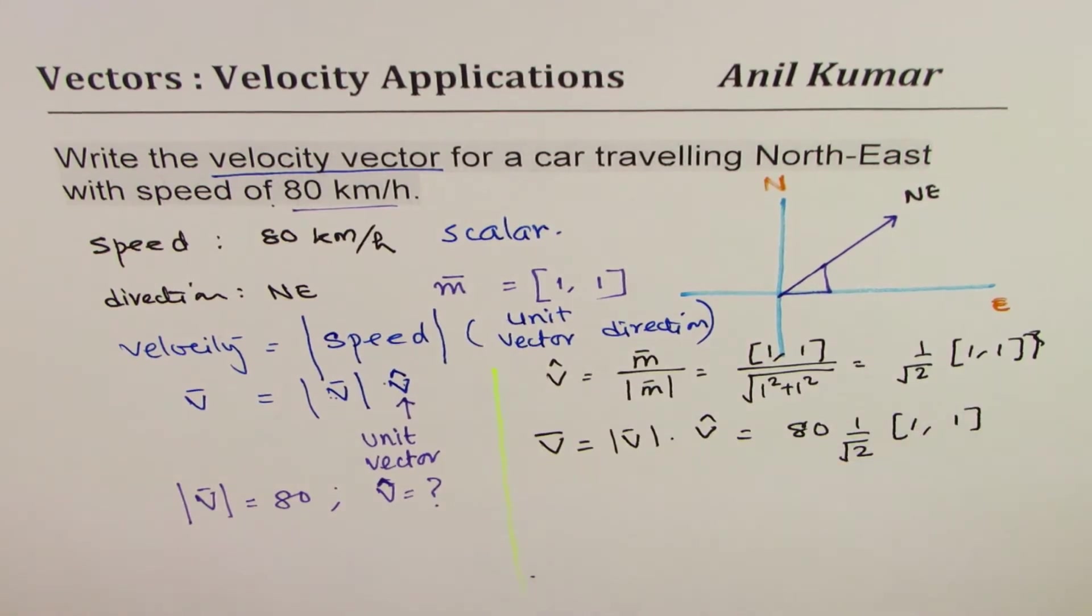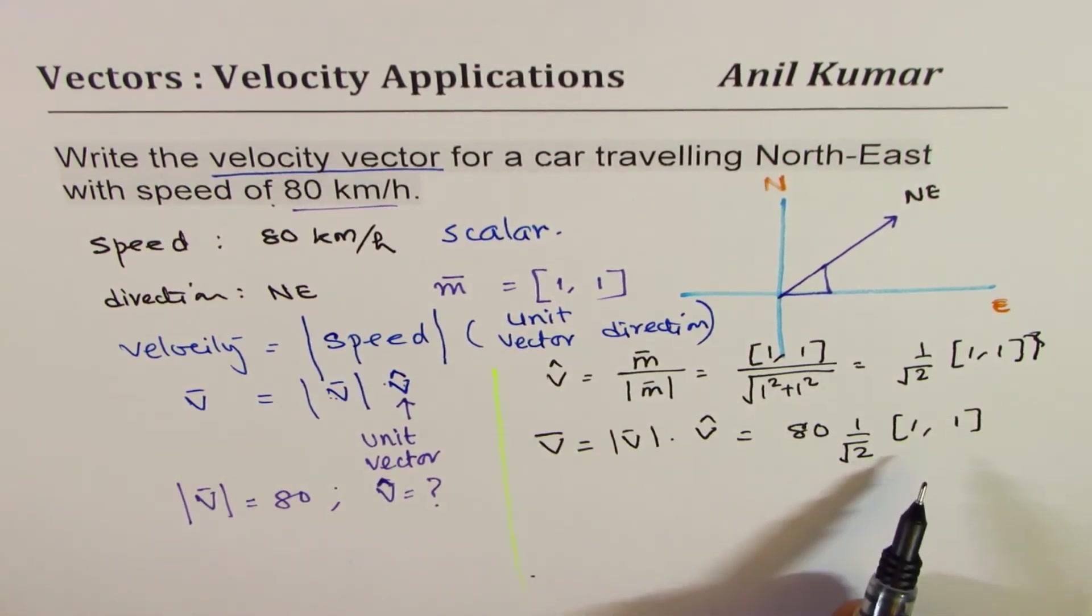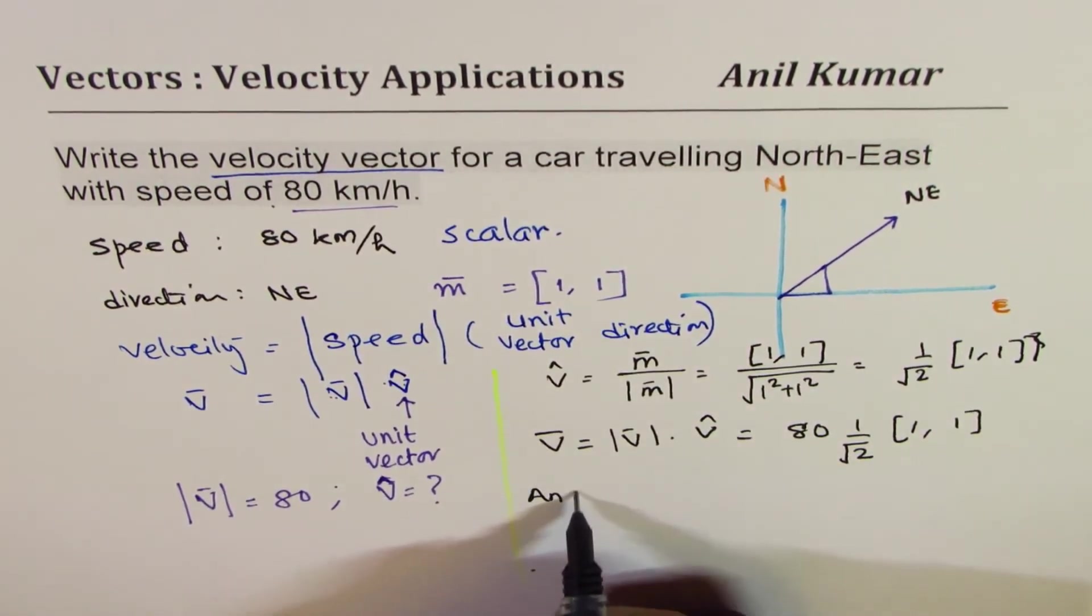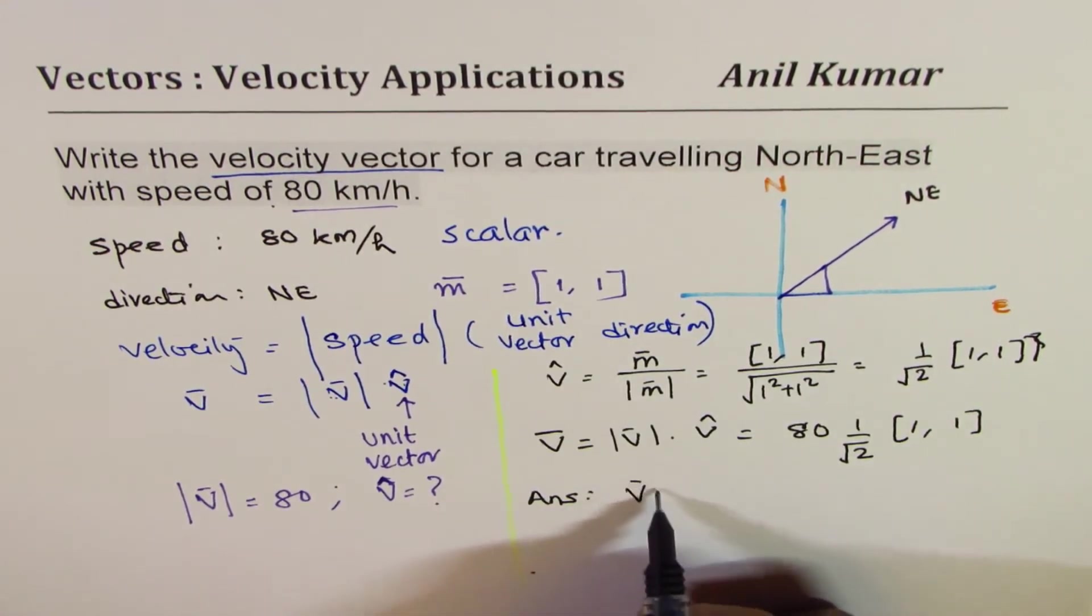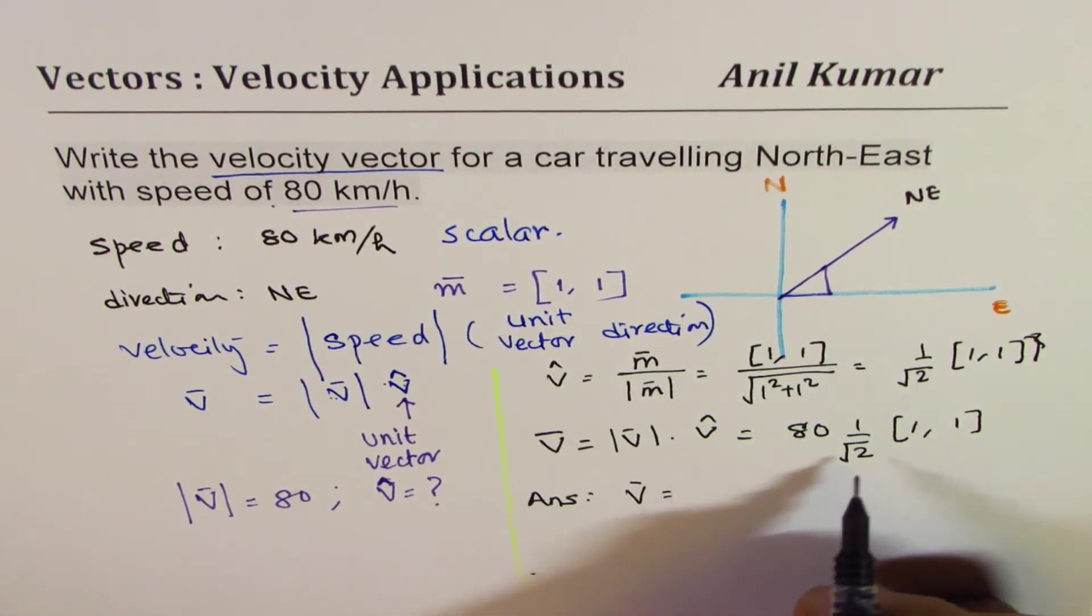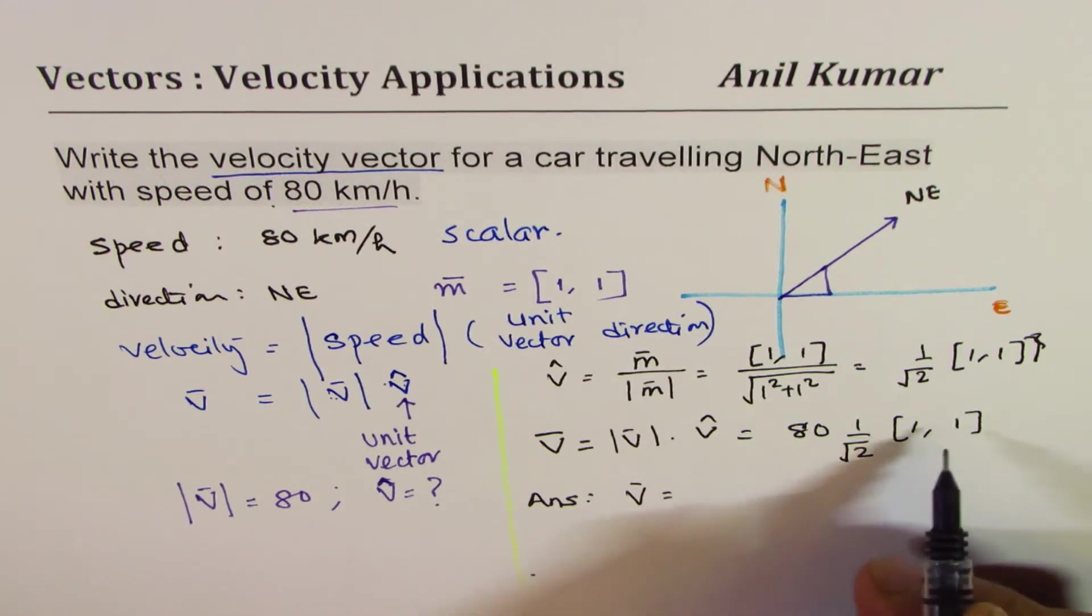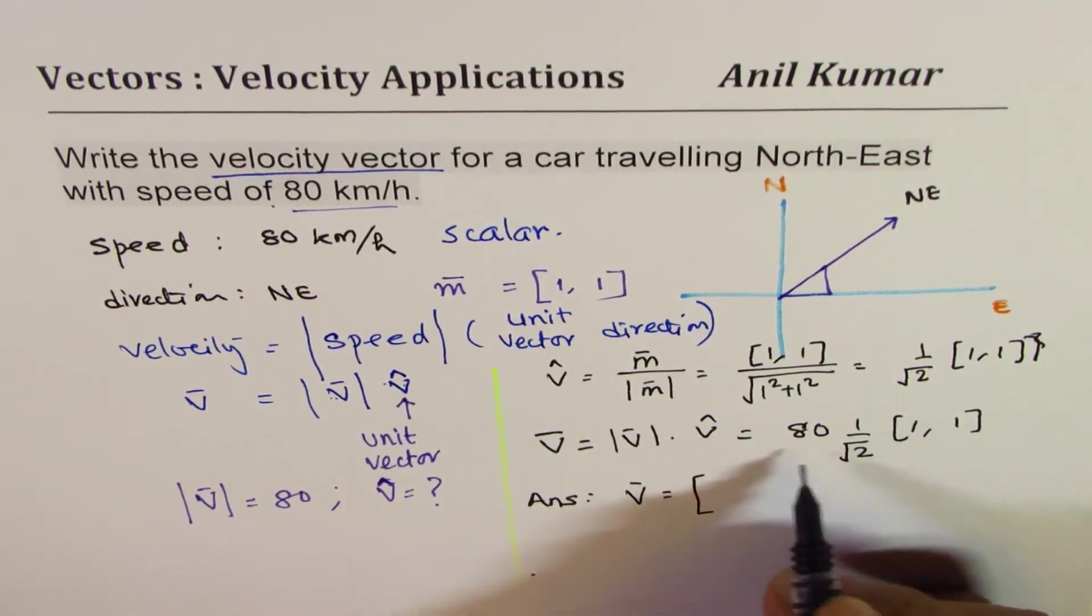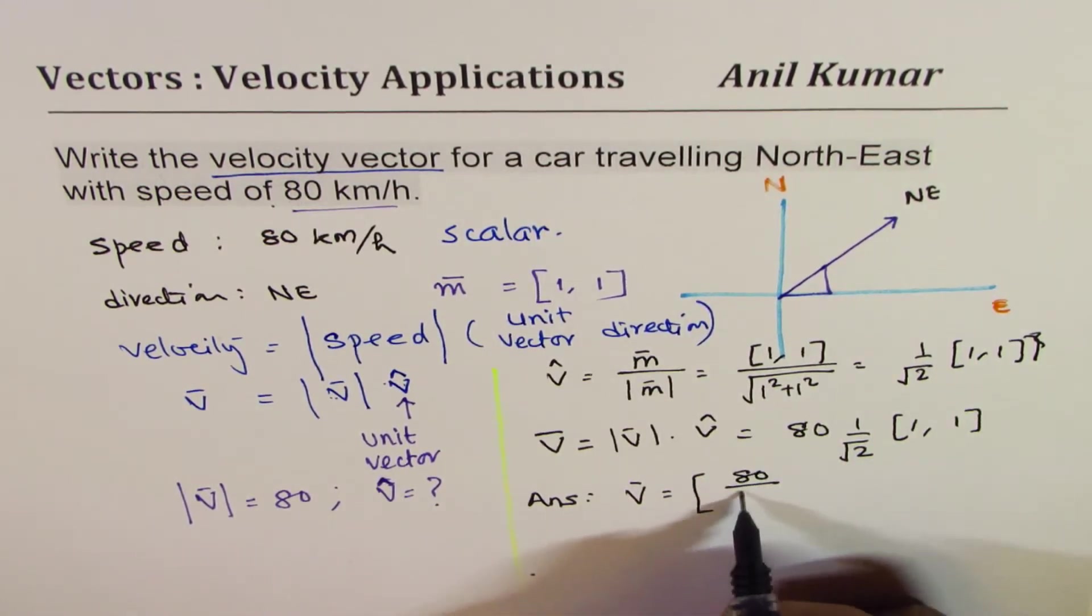So that is the answer. So we can write our answer with units, that is the velocity is, you can write them inside or outside, doesn't make a difference. If you want to write them inside it will be 80 over square root 2, [1,1].